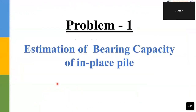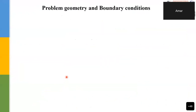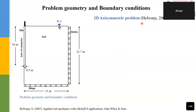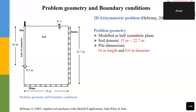Problem 1 is the estimation of bearing capacity of an in-place pile. This is a 2D axisymmetric problem taken from a book by Sam Halwani. The soil domain is 15 m × 22.7 m. The pile has a length of 16 m and a diameter of 0.67 m. Since the problem is axisymmetric, the pile is modeled with a length of 16 m and a radius of 0.335 m, with the other half mirrored across the axis.